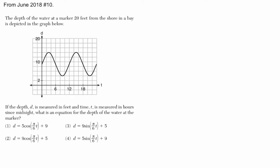So it says the depth of the water at a marker 20 feet below the shore is depicted in the graph below. So you get a marker going up and down and the depth d is measured in feet. So this is d and t is in time and hours since midnight. What is an equation that represents this function?